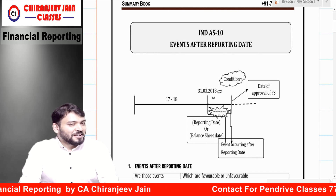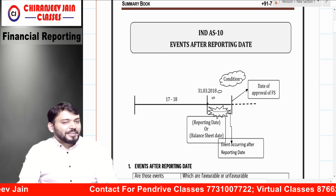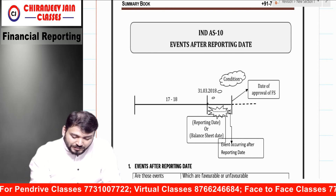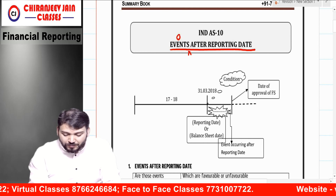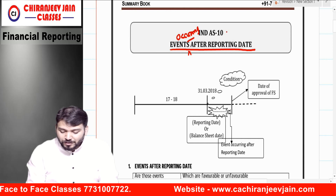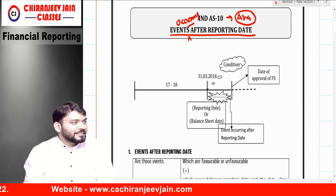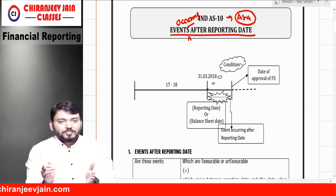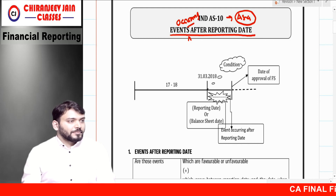Hello everyone. Today we'll do a revision of IND AS 10. So what is the name of IND AS 10? Events Occurring After Reporting Date. What is the corresponding AS? AS 4, whose name is Contingencies and Events Occurring After Balance Date. In IND AS we use the term 'reporting date'.